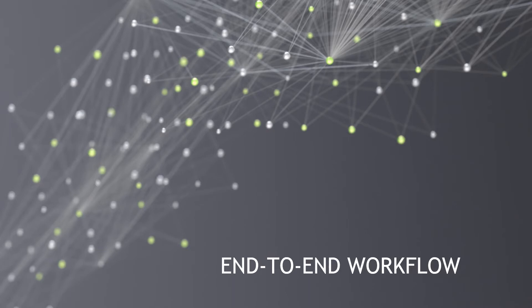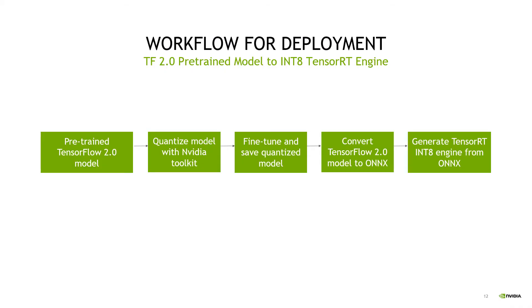Now let's look into how we can deploy a model trained using NVIDIA TF2 Quantization Toolkit with ONNX TensorRT. The workflow consists of taking a pre-trained TensorFlow 2.0 model and quantizing it with our NVIDIA toolkit. We fine-tune it for a small number of epochs to simulate the quantization process that occurs during inference and store the quantized model. We then convert this model into ONNX using TF2ONNX converter, and once the ONNX graph is generated, we generate a TensorRT engine out of it using TensorRT APIs.